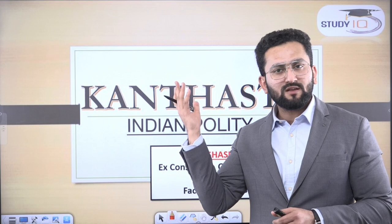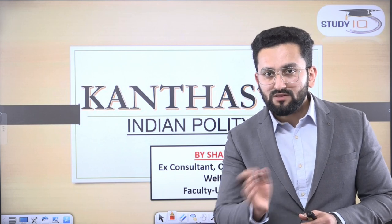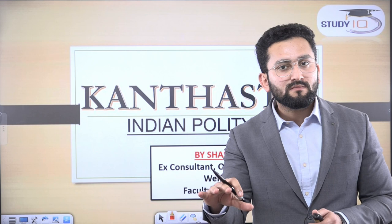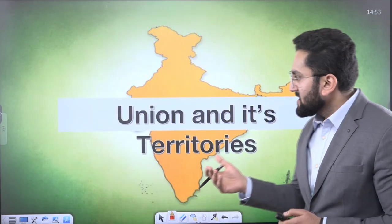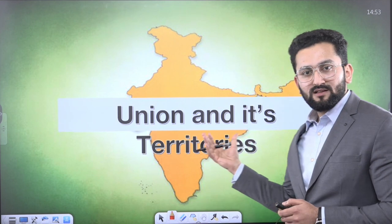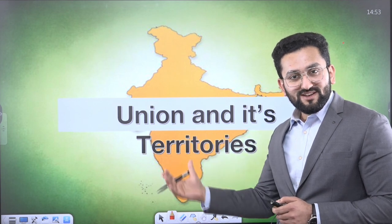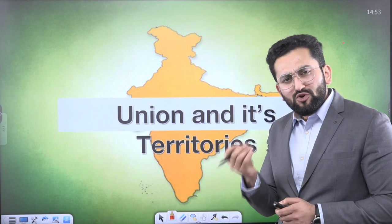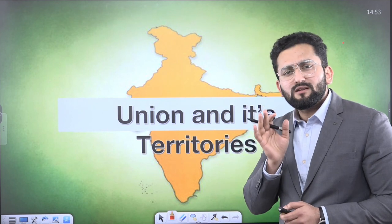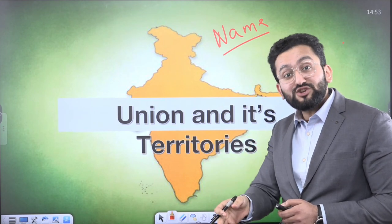Consider someone who belongs to another part of the world and is holding our Constitution. As that person turns the page and opens Part One, what do you think he or she should expect from this part? If this is the political entity whom we call India — I'm using the word 'political entity' because the Constitution gives you the framework, the way this political structure is going to function — the first article should tell us the name of this entity. And this is exactly what is mentioned in Article 1.